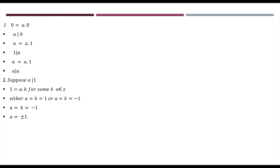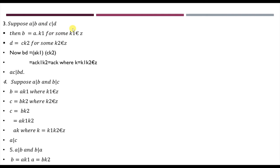For condition 3: a divides b means b = a·k₁ for some k₁ ∈ ℤ, and c divides d means d = c·k₂ for some k₂ ∈ ℤ. Multiplying: b×d = (a·k₁)(c·k₂) = ac·(k₁k₂). Since k₁ and k₂ are integers, k₁k₂ is an integer, so ac divides bd.